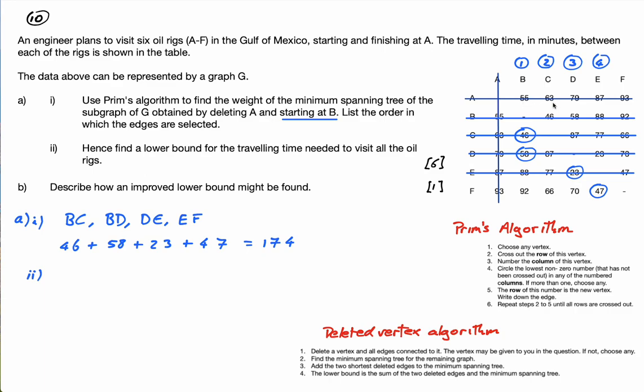That's it, so the lower bound will be 174 plus 55 plus 63. Dare I do this in my head? So that's 110, so that would be 284, 289, 292. I hope that's right. That's the lower bound.